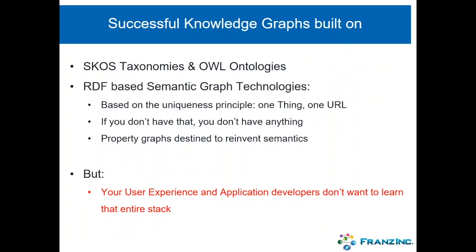All the successful knowledge graphs I see are about data integration. Because it's data integration, it's incredibly important that you have RDF. All the knowledge graphs I know are centered around core taxonomies — you want to make sure everyone talks about the same thing — and ontologies for schemas. Everything is based on the core principle of the semantic web: one thing, one URL. Without that, you don't have anything.